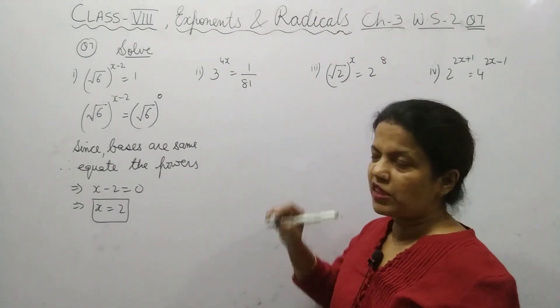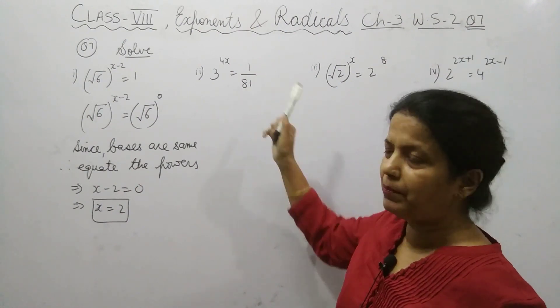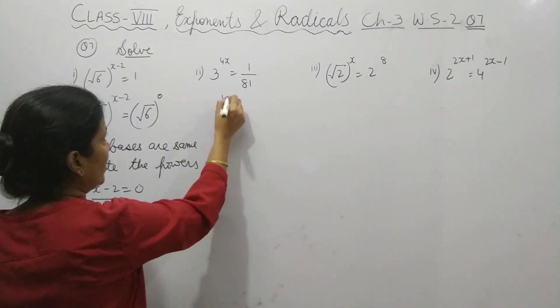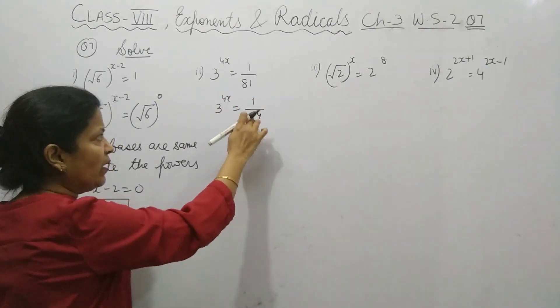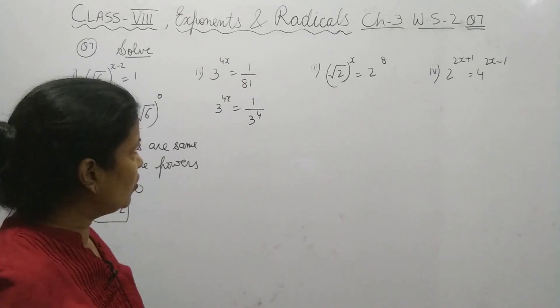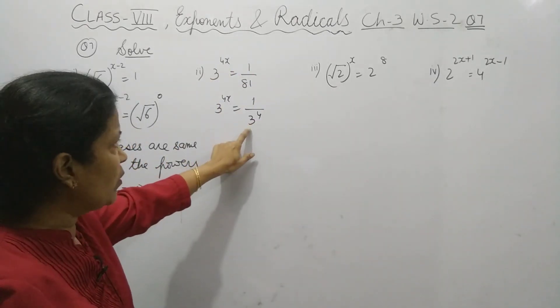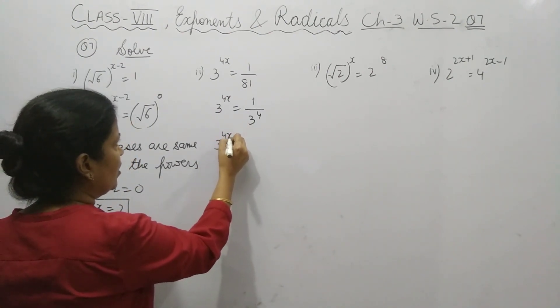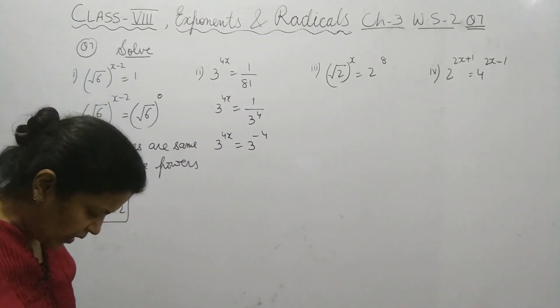Second part. Again, you have to try to make the base same. 3 power 4x, and 81 is 3 power 4. Now you have to keep both the bases on the same side. So you will take this on the upper side. It will become 3 power minus 4.